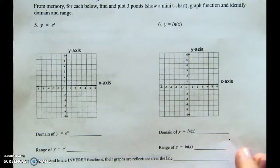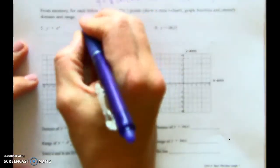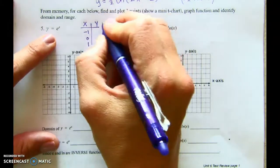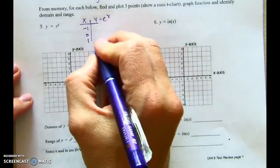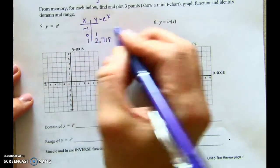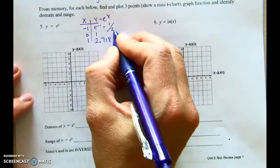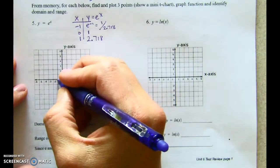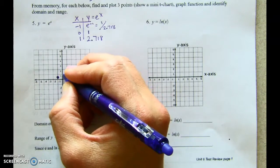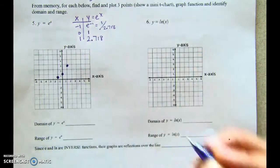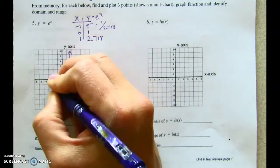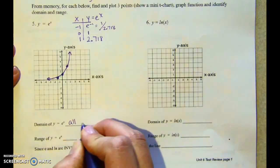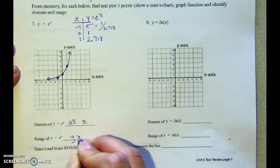Here's how we graph e^x using a mini t-chart. We pick x = −1, 0, 1. e^1 = 2.718, e^0 = 1, and e^(−1) = 1/2.718, which is about one-third. Plot (−1, 1/3), (0, 1), and (1, 2.7). It's exponential with an asymptote at y = 0. Domain is all real numbers; range is y greater than zero, not equal.